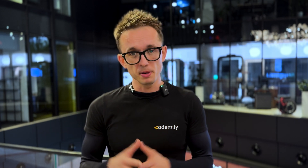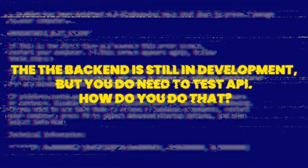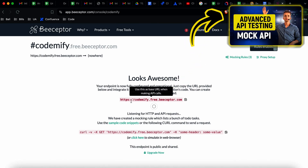This is a great question because not many people know about mocking API data. The question is: the backend is still in development but you need to test the API — how do you do that? You would simply mock the backend using any existing mocking services. By the way, there's a complete video on how to mock APIs with Wiremock right here.